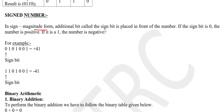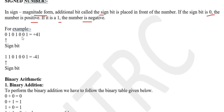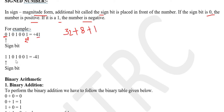For signed numbers, in sign-magnitude form one additional bit is added before the number. If the sign bit is 0, the number is positive; if it is 1, the number is negative. For example, if we are given 0-1-0-1-0-0-1 in signed bit representation, the first bit 0 means it is a positive number, and the remaining bits 101001 in decimal equal 32 plus 8 plus 1 which is 41. If the leading bit were 1 instead, the number would be minus 41.